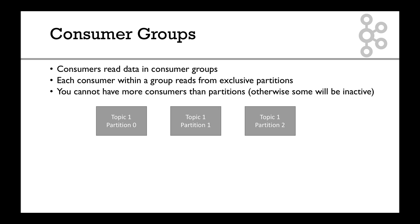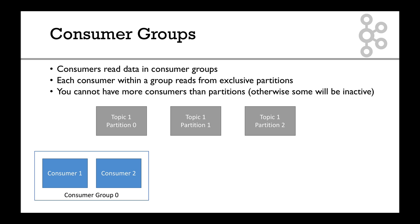Let's take an example. We have Topic 1 with three partitions. We take a consumer group with two consumers, and these two consumers have to decide which partition to read from — they cannot read from the same partitions. Consumer 1 will read from partition 0 and partition 1, and Consumer 2 will read from partition 2. That works really well.